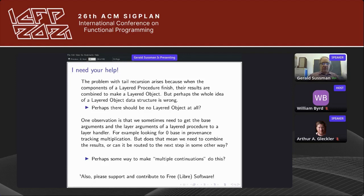I need your help. The problem with tail recursion arises because the components of a layered procedure finish, and their results are combined to make a layered object. But perhaps the idea of a layered object data structure is wrong. Supposedly there should be no layered objects at all. One of the reasons why is because the way tail recursion works, there's really only one continuation up there collecting the result at the end. Maybe that's the guy who should be goosed up to collect multiple guys sending stuff to it. I'd like to get everybody to work on this with me.